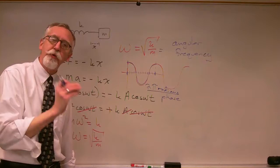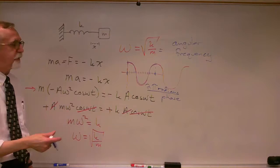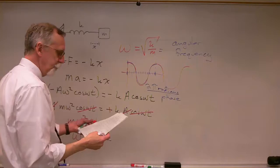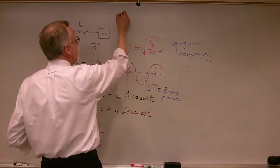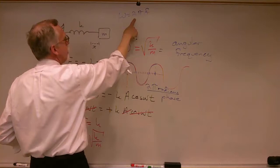For simple harmonic motion, we'll refer to omega as the angular frequency of the motion, telling us how many radians of phase per second the oscillator is moving through, as opposed to an angular velocity. And we remember omega is two pi f.